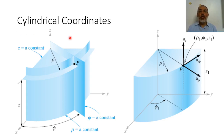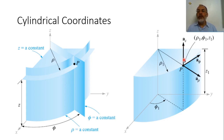Cylindrical coordinates are represented in three orthogonal coordinates: the rho direction, which comes from the z-axis parallel to the x-y plane; the phi direction, which is normal to rho; and the z direction. The z direction is common between Cartesian and cylindrical coordinates, so the z direction here is the same.